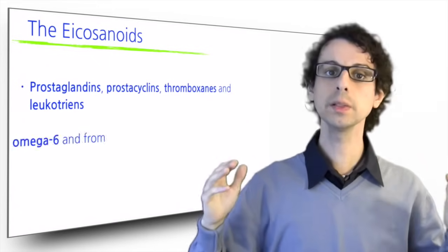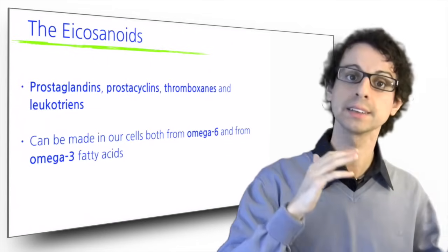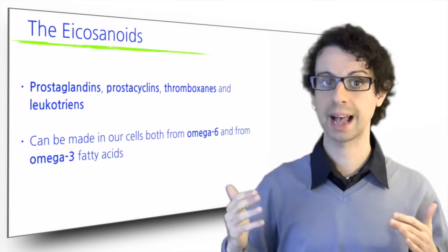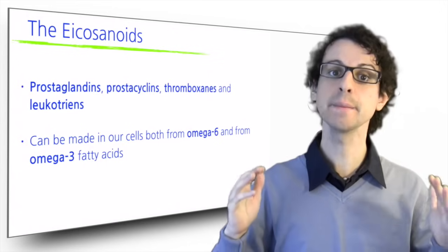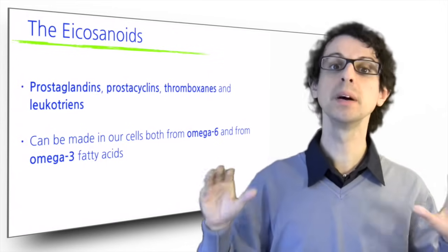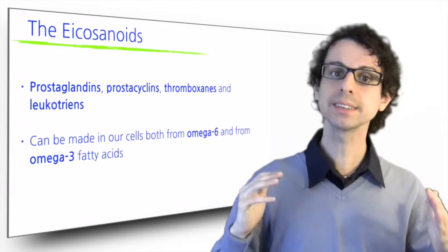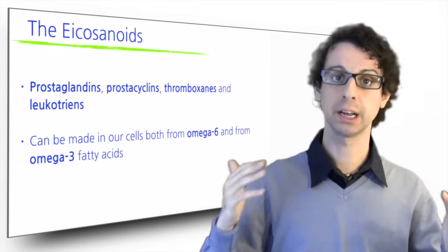We can build all these molecules both from omega-6 and from omega-3 fatty acids, and these molecules will affect the same areas of metabolism, but in different ways. Every cell in our body makes eicosanoids.